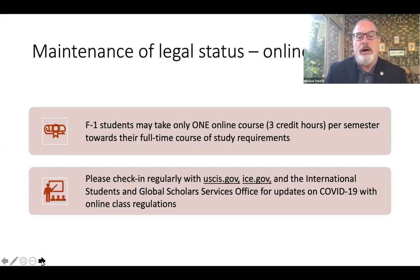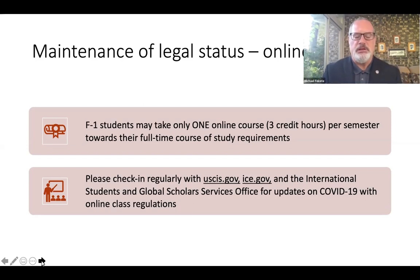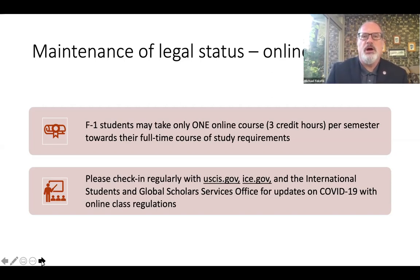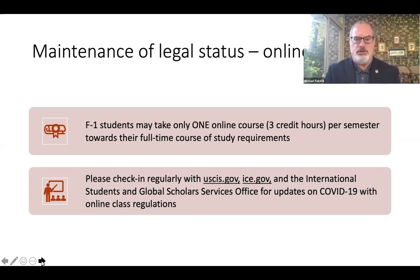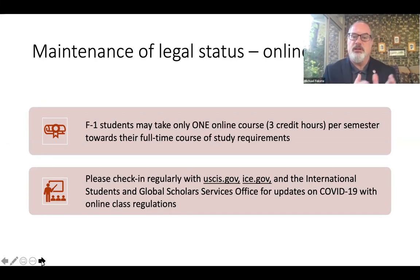A lot of questions come up about the opportunity to take online classes. Traditionally, students come to the United States to take face-to-face classes. Students are normally expected to take no more than one online class per semester. If you're a grad student taking nine credits, one of those three-credit classes per session can be online. For undergraduates taking 12 credits, nine credits must be face-to-face and the remaining three credits can be online.